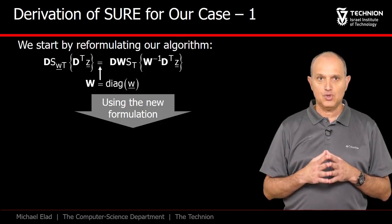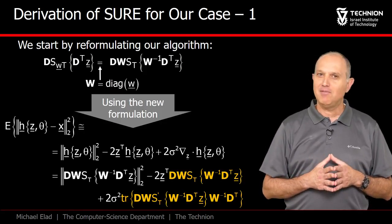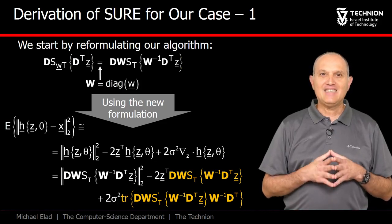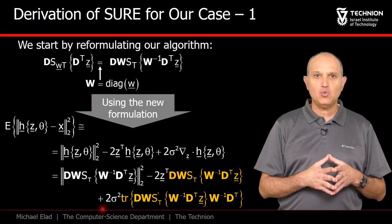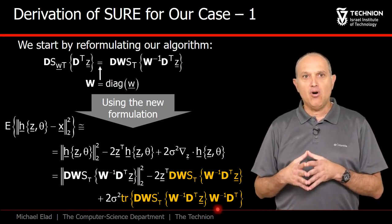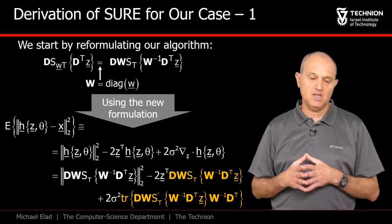Now we are ready to invoke SURE. Oh my god, this looks so ugly, but don't be alarmed. These are exactly the three terms we have seen when deriving SURE. The last one may be a bit more of a challenge, since we need to take the derivative of the denoiser with respect to its input.